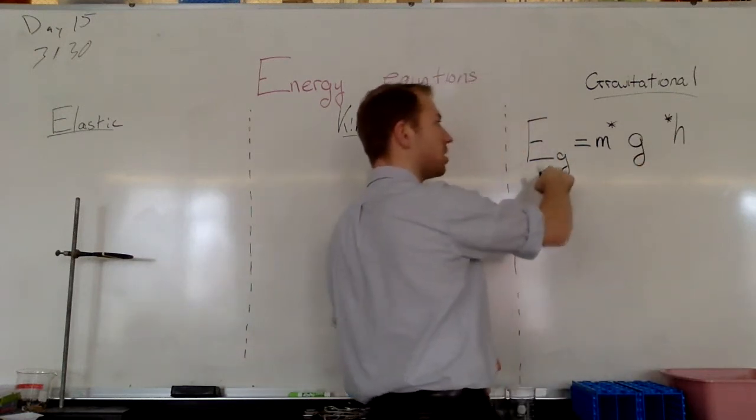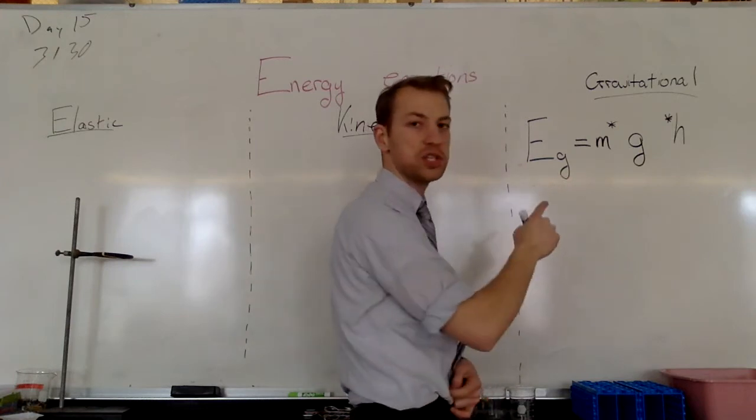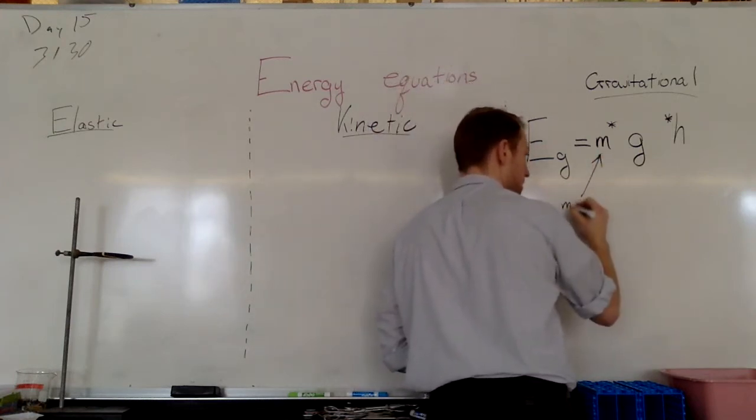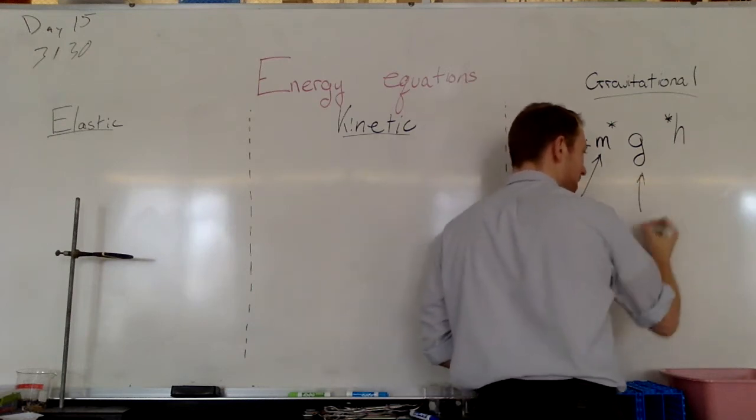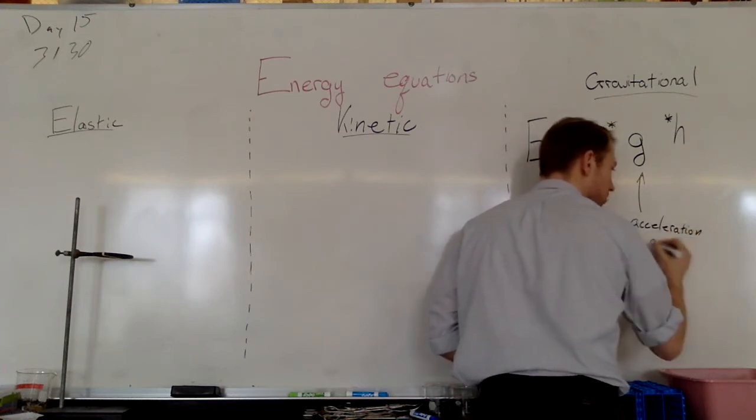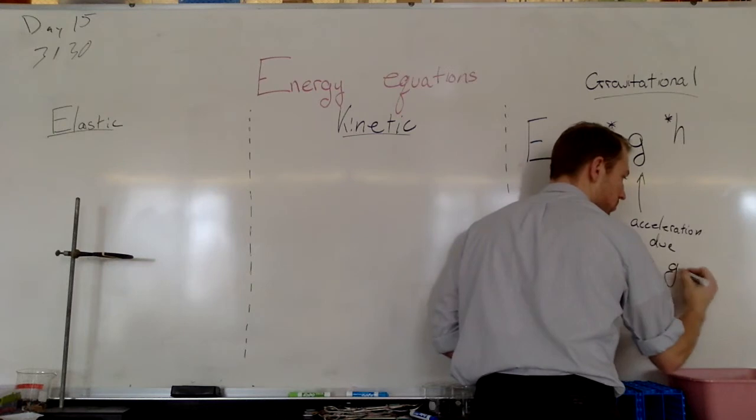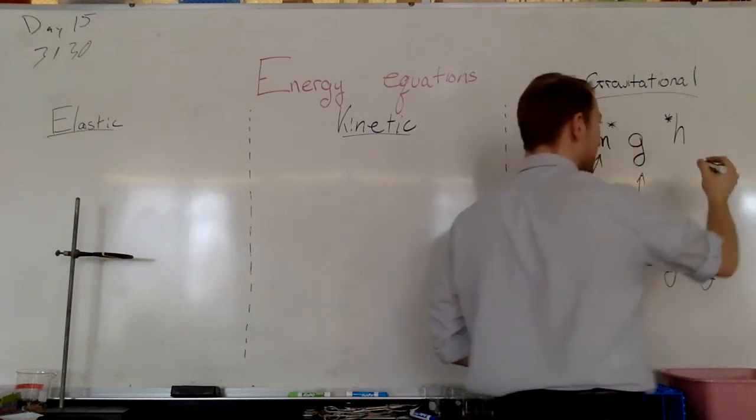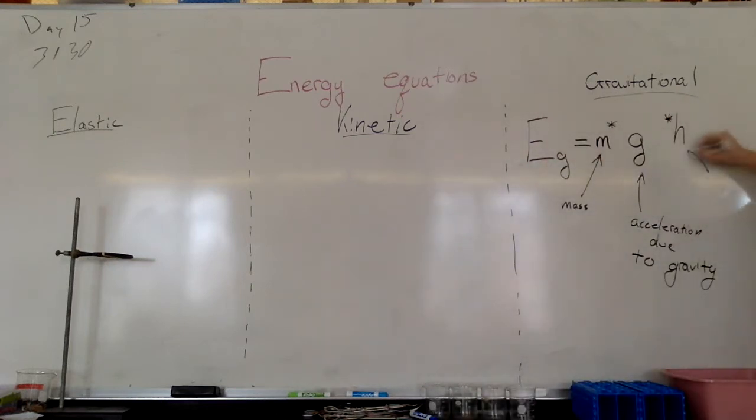So if we want to know how much gravitational energy something has, we can take its mass. We multiply it by the acceleration due to gravity. And lastly, we multiply both of those values by the height. Good. So this is one equation down, EG is equal to MGH, and I remember this because it's mass general hospital. I don't know why I remember it that way, but I've always remembered it that way.